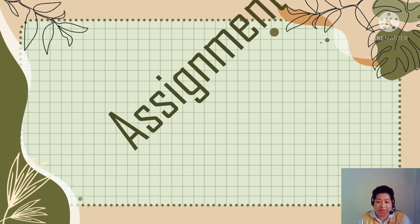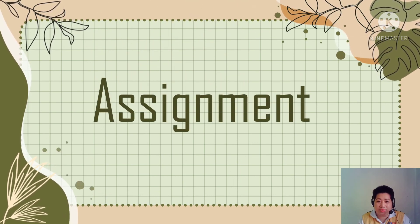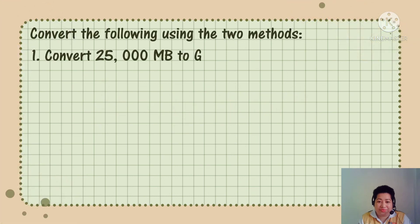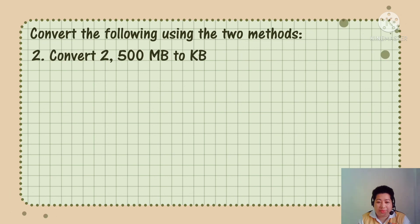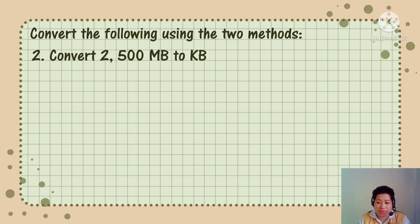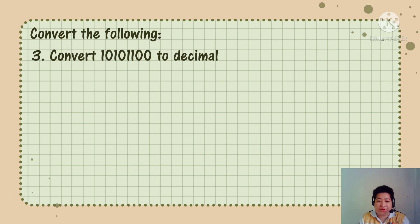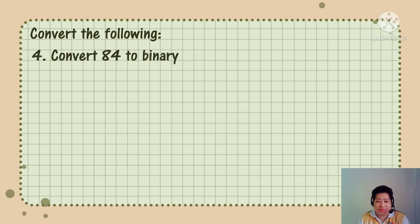For your assignment, copy the following in your notebook. Convert the following using two methods. Number 1: convert 25,000 megabytes to gigabytes. Number 2: convert 2,500 megabytes to kilobytes using two methods. Number 3: convert 10101100 to decimal. And number 4: convert 84 to binary.